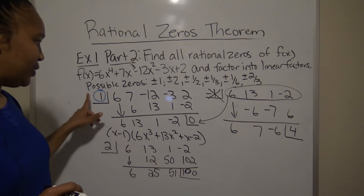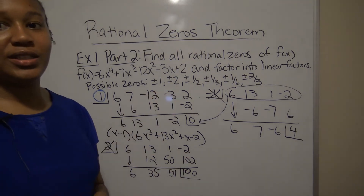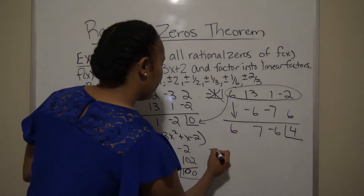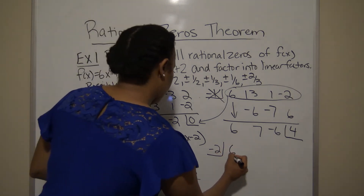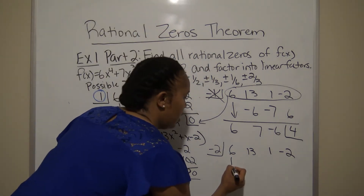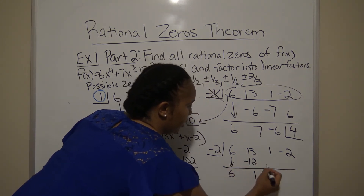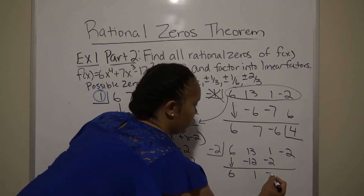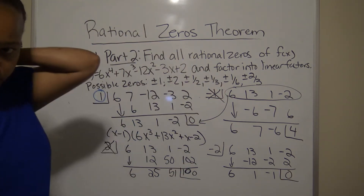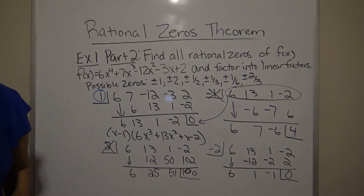Now I'll test k = -2 with the same coefficients 6, 13, 1, -2. Dropping 6: (-2)×6=-12, 13-12=1, (-2)×1=-2, 1+(-2)=-1, (-2)×(-1)=2, -2+2=0. The remainder is zero, so -2 is also a zero.